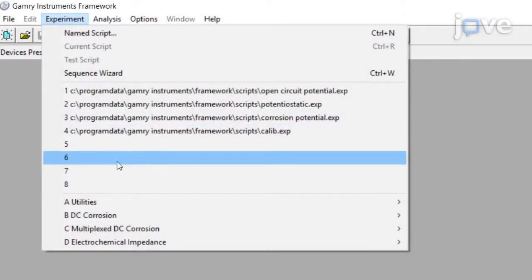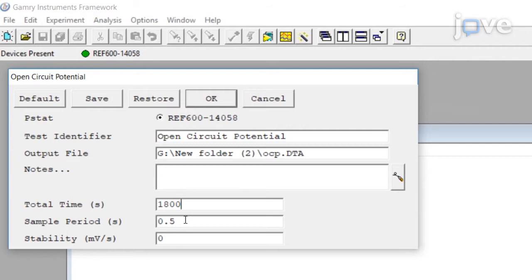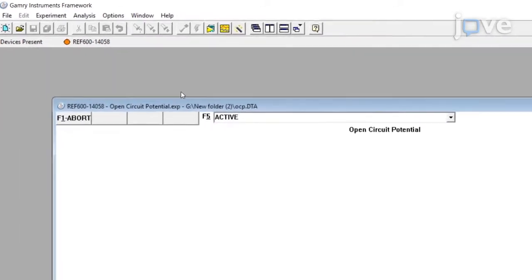To measure the tribo-corrosion rate from the tribo-corrosion test at the open circuit potential, repeat the test as demonstrated but with the applied potential set to the open circuit potential.